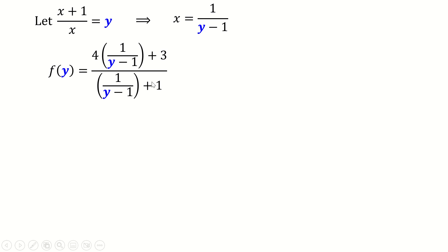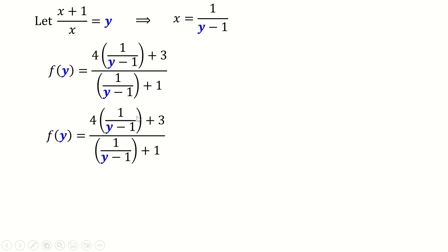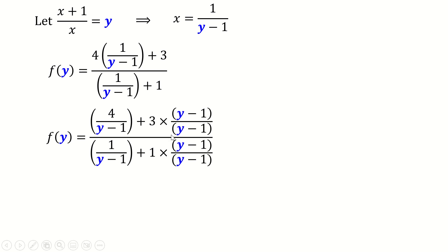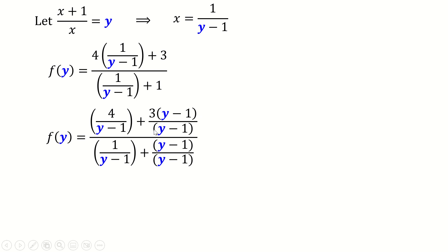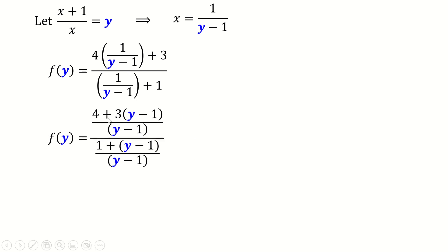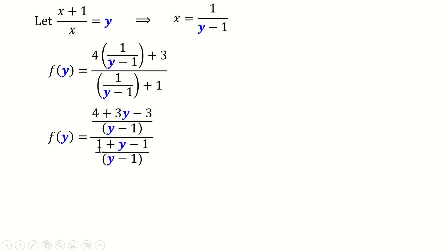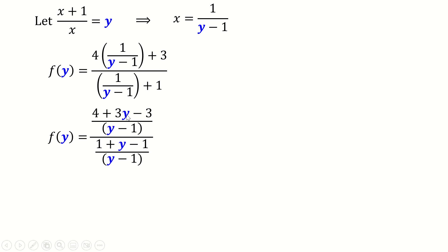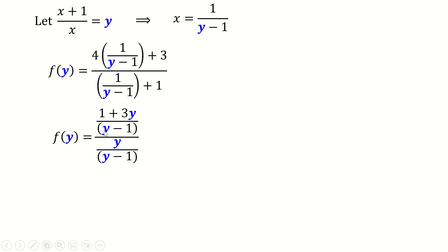We combine the numerator and denominator into single fractions. In the numerator, we multiply 3 by (y−1) and combine to get 4 + 3(y−1) = 4 + 3y − 3 = 1 + 3y. In the denominator, 1/(y−1) + 1 gives 1 + (y−1) = y, so the denominator becomes y/(y−1).